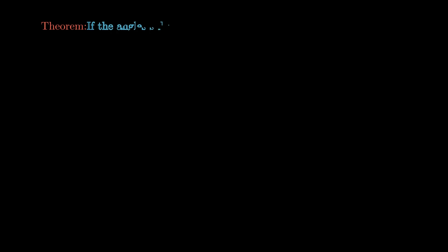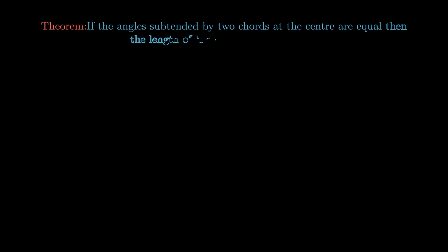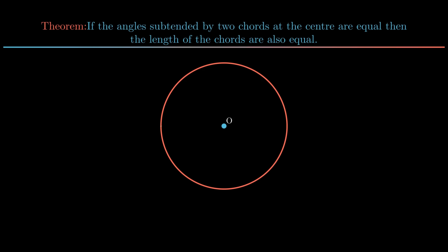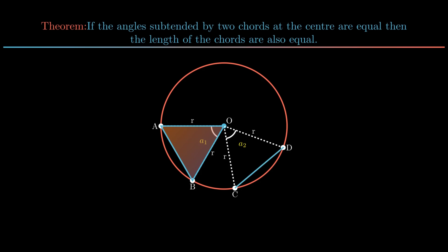The converse of the theorem is also true: if the angles subtended by the two chords at the center are equal, then the lengths of the chords are also equal. For the proof, only the condition of congruency is changed.